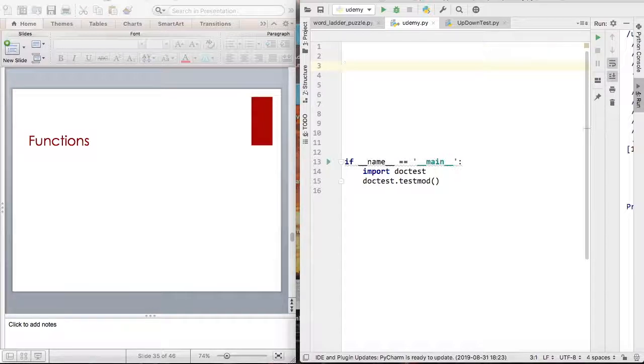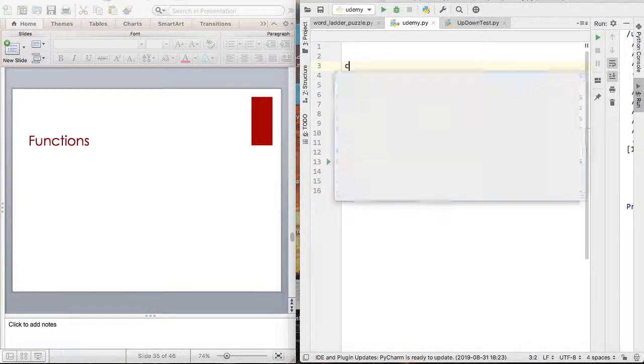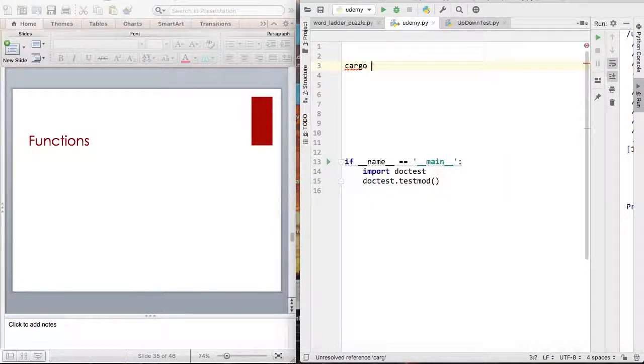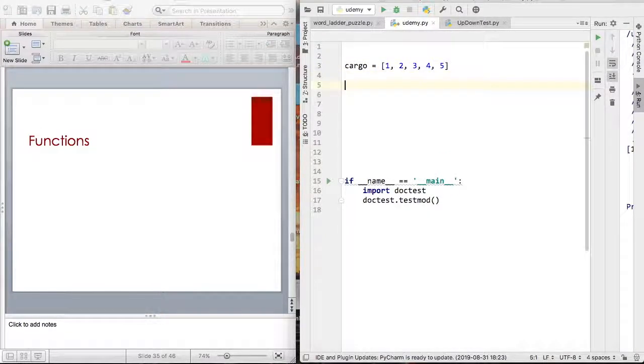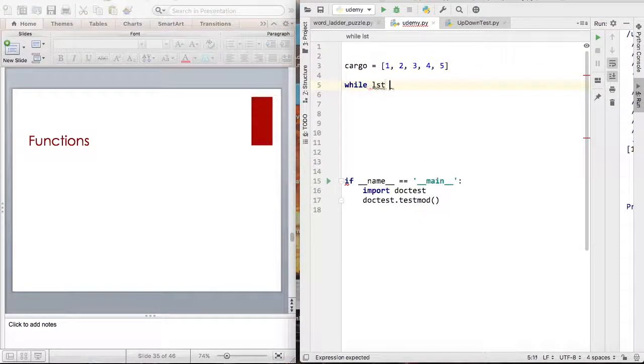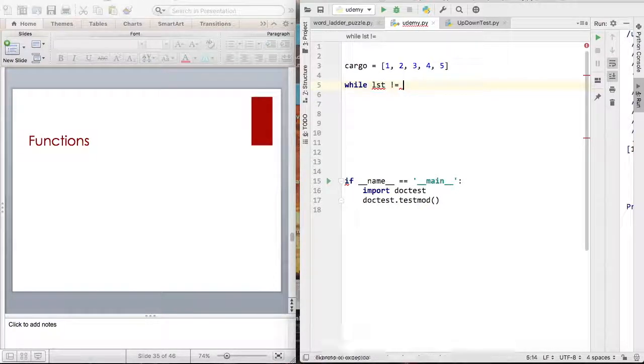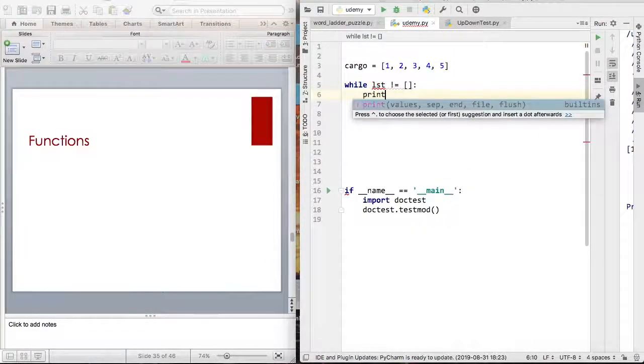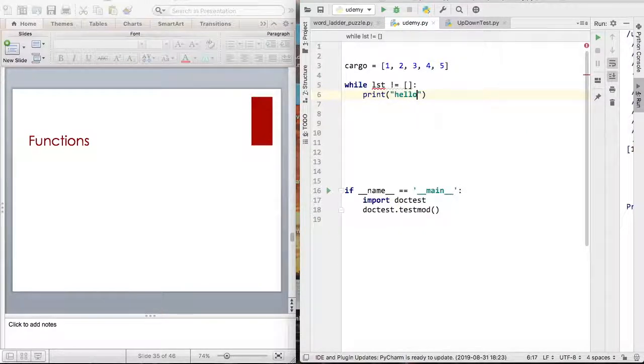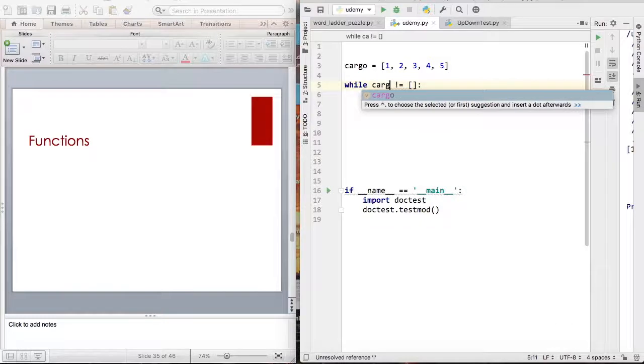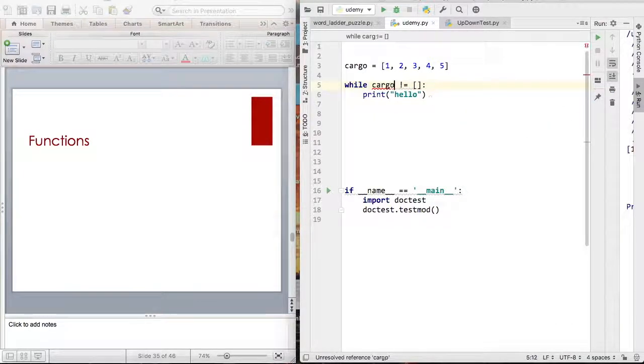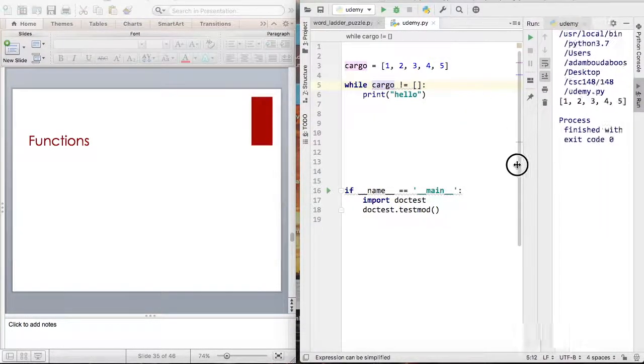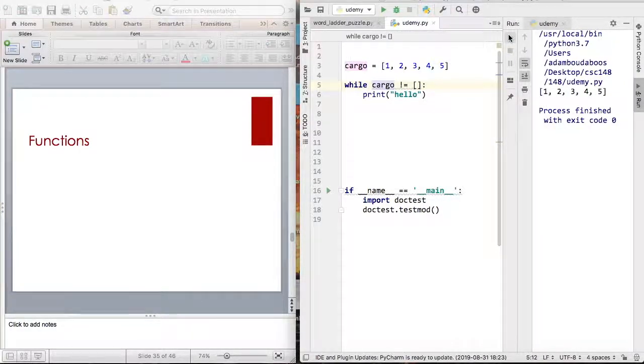So let's say I have a list called cargo and my condition is that if my list is not equal to an empty list. I want you to try and think what's going to happen when I run it.